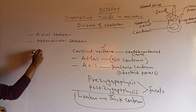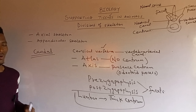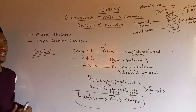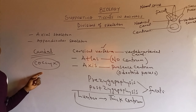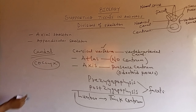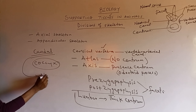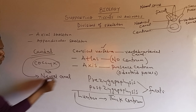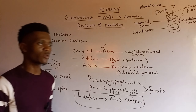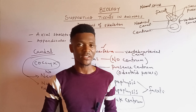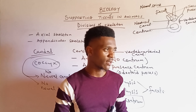The caudal vertebra is present in the tail region. In man, according to evolution, it is believed that humans once had tails, but due to disuse they degenerated to form a mass of bones called the coccyx, which is a vestigial organ — an organ without a known function. The caudal vertebra is unique in that it lacks the neural canal and the neural spine. The general function of the vertebral column is to serve as protective covering for the spinal cord.